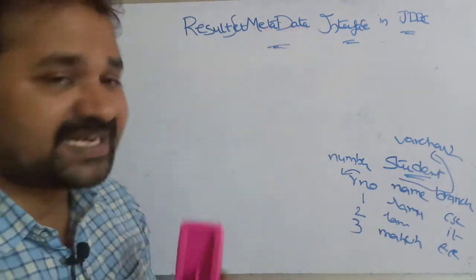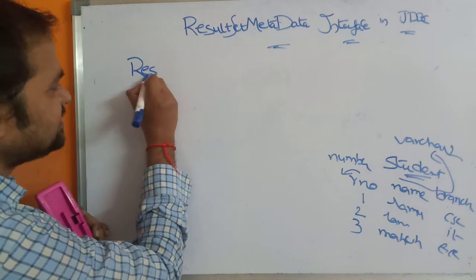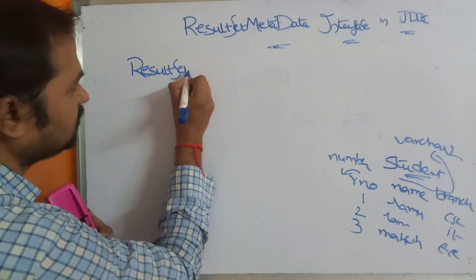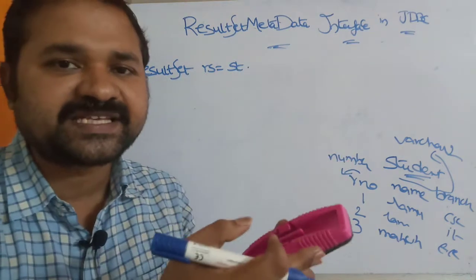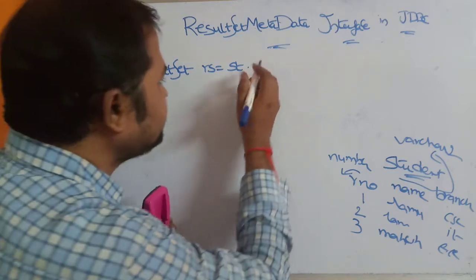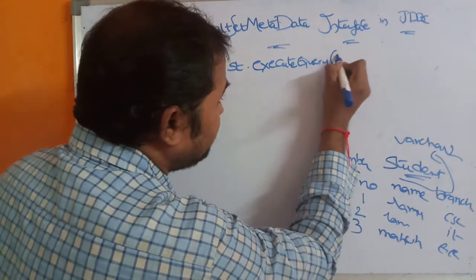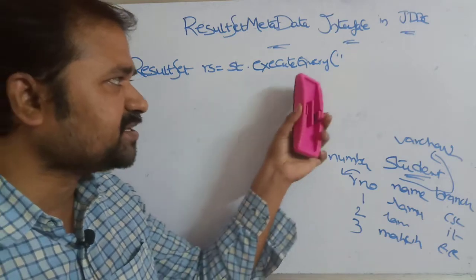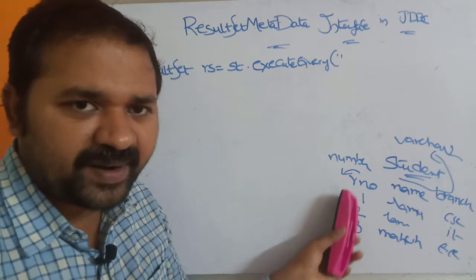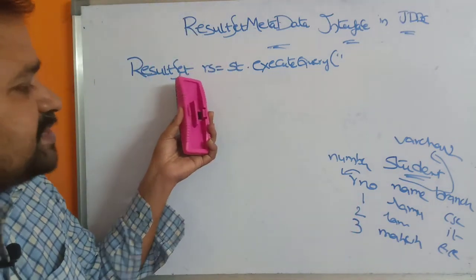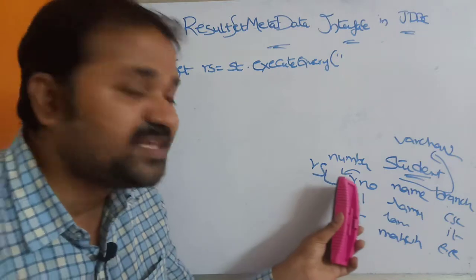Let us see how we can use the ResultSet Metadata. For that purpose, first we have to create an object for the ResultSet. We write: Statement ST = CON.createStatement(); and then ResultSet RS = ST.executeQuery(...). In order to perform a select operation, we use the executeQuery method. The executeQuery method returns the records available in the table, and those records are stored in the ResultSet object. The ResultSet object initially points to before the first record.